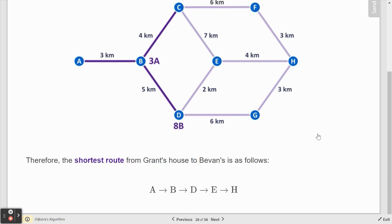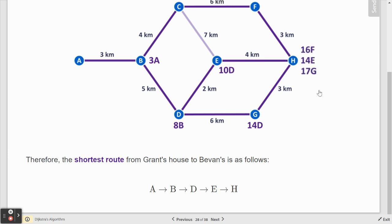The shortest path was A, B, D, E, H, and by adding all those up, we had a distance of 14.